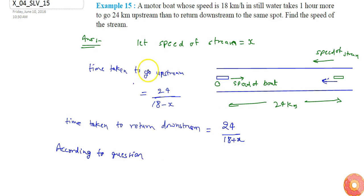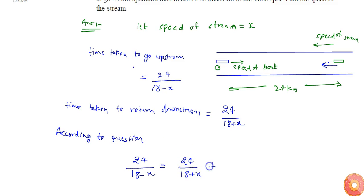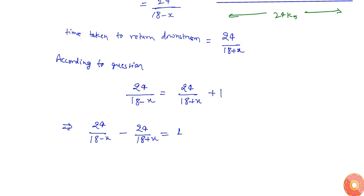According to the question, when the motorboat goes upstream it takes one hour more than to return downstream. So I can say that 24 divided by (18 minus x) equals 24 divided by (18 plus x) plus 1, or equivalently 24/(18 minus x) minus 24/(18 plus x) equals 1.